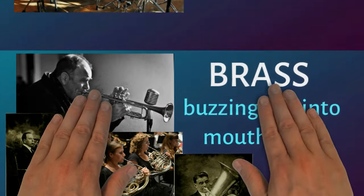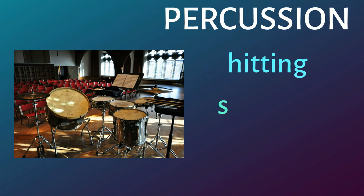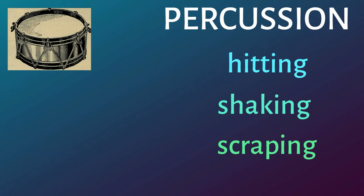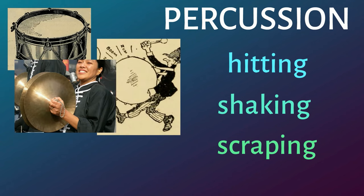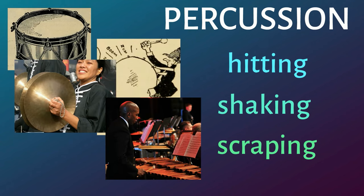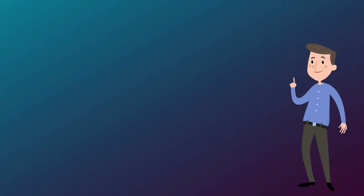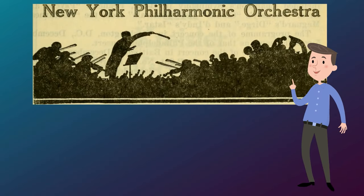The percussion family all produce sound by either hitting, shaking, or scraping their instruments. Examples include the snare drum, bass drum, crash cymbals, xylophone, and timpani. These four families of instruments make up the orchestra.